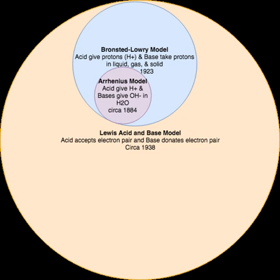The Bronsted-Lowry definition, formulated in 1923 independently by Johannes Nikolaus Bronsted in Denmark and Martin Lowry in England, is based upon the idea of protonation of bases through the deprotonation of acids—that is, the ability of acids to donate hydrogen ions H+, otherwise known as protons, to bases, which accept them. An acid-base reaction is thus the removal of a hydrogen ion from the acid and its addition to the base. The removal of a proton from an acid produces its conjugate base, and the reception of a proton by a base produces its conjugate acid.